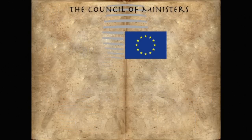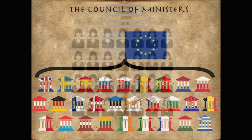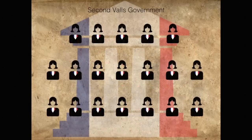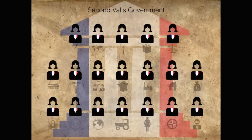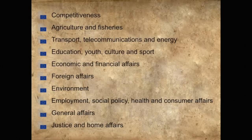The Council functions as the representation of the governments of the Member States and consists of 28 Ministers, one from each Member State. As each country has multiple Ministers, each with its own portfolio, the Council, while officially a single entity, meets in 10 different compositions, depending on the subject being discussed.